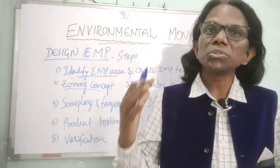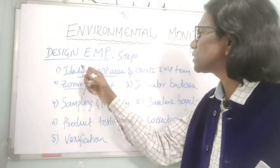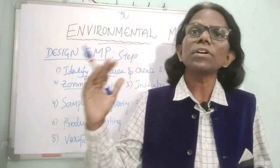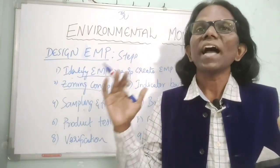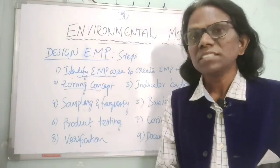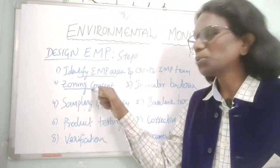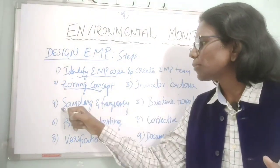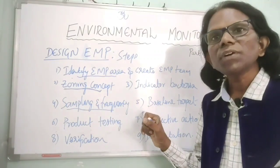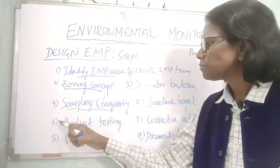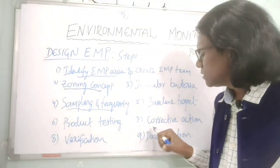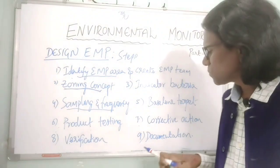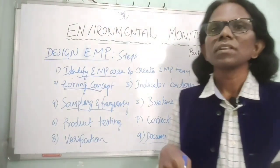To design a good environmental monitoring program, there are nine steps involved. Step 1: create an EMP team and identify the EMP areas in the facility. Step 2: establish a zoning concept. Step 3: indicator bacteria. Step 4: sampling and frequency. Step 5: baseline. Step 6: product testing. Step 7: corrective action. Step 8: verification. Step 9: documentation.